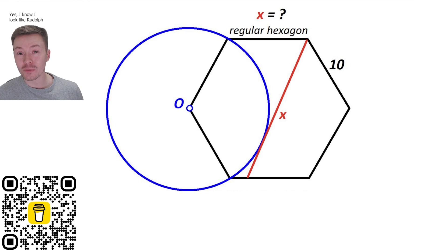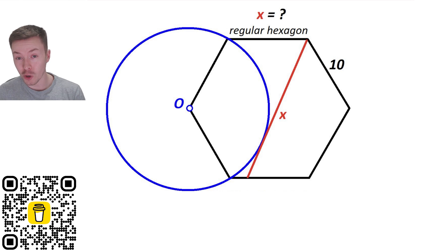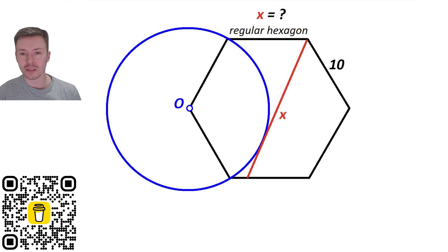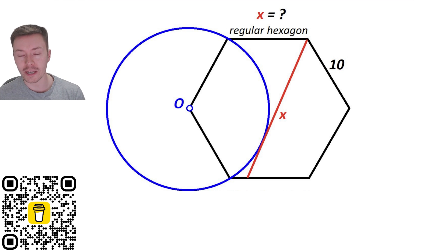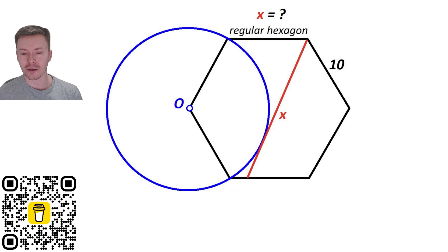Welcome back to the channel. This week we're looking at a problem involving a circle with a regular hexagon, where one vertex of the hexagon goes to the center of the circle. There's a line going from one vertex of the hexagon to a side of the hexagon which is a tangent to the circle, and we need to work out the length of this tangent for a regular hexagon with side length 10.